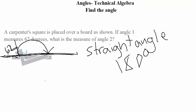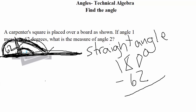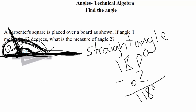If angle one is 62 degrees, what is angle two? Any straight line equals 180 degrees. So if we have this straight line and up until this point is 62 degrees, we need to find the remainder. Take that 180 degrees and subtract 62 from it — that gives us the missing angle. 180 minus 62 equals 118 degrees. So angle two is 118 degrees.